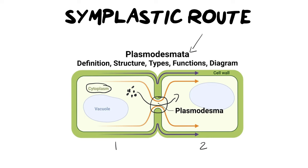The first thing to note is when does the symplastic route occur. This is when we have normal conditions. What do normal conditions mean? It means the plant has enough water — even if it might be sunny, the water balance is equal: what it's absorbed versus what it's lost. Maybe the day is normal in the sense that there's not too much wind, not too little, so there's not too much transpiration. Essentially, the symplastic route occurs when a plant is living in stable or adequate conditions.